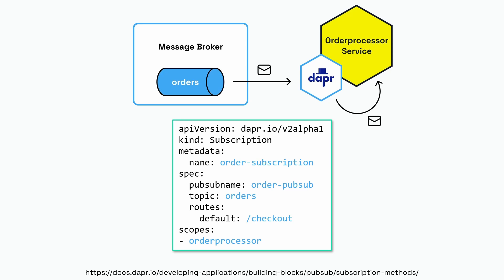On the subscriber side, the order processor service that will receive the message needs to have a subscription to the orders topic. We can create a subscription in two different ways. What I've shown here is the subscription in a declarative way using a YAML file. You can also do it via code — there's a link below to see the programmatic way.